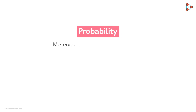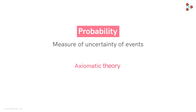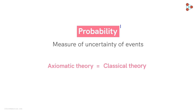We know that probability is a measure of uncertainty of events in a random experiment. Also, we have established the equivalence between the axiomatic theory and the classical theory of probability in case of equally likely outcomes.